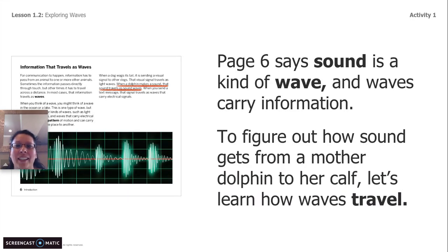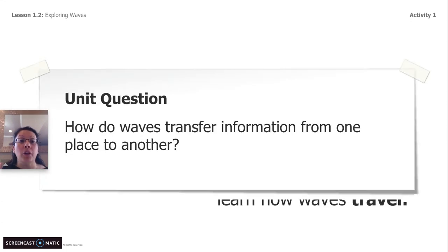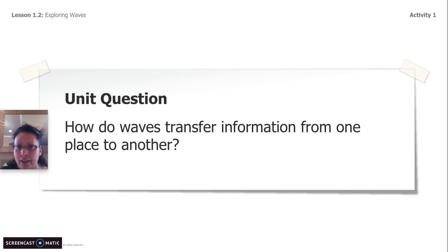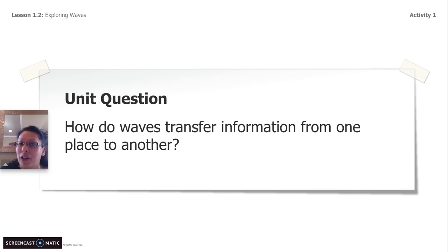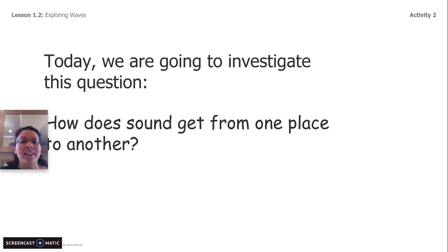So on page six it said sound travels as a kind of wave and it can carry information. When a dolphin makes a sound, that sound travels as sound waves. The big unit question we're going to be able to answer at the end of all our lessons is: how do waves transfer information from one place to another? But before we can answer that big unit question, there's another question we need to figure out: how does sound get from one place to another?